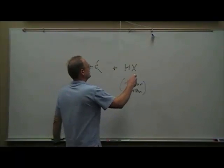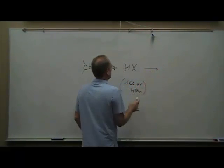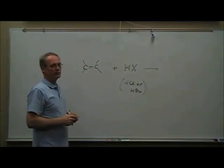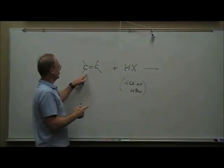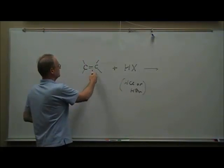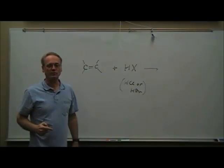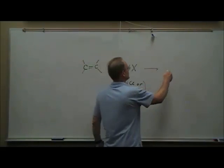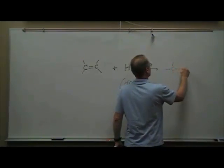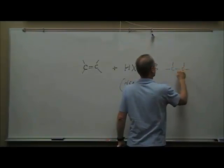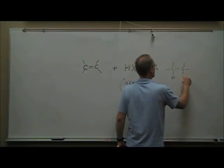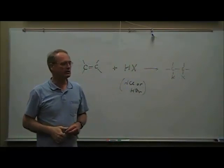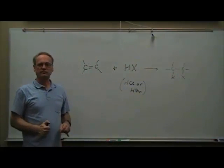What's going to happen is pretty simple: the hydrogen and the chlorine or bromine will split up. One of them will attach to one carbon, the other will attach to the other carbon, and the double bond will become a single bond. Here's the structure for the final product — we'll have the H on one of the two carbons and the X on the other. Notice that this is a balanced equation.